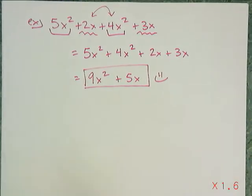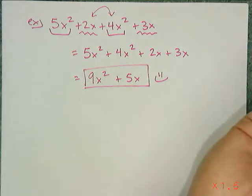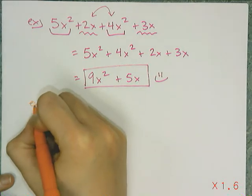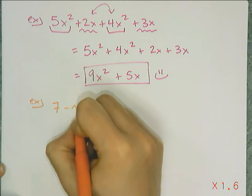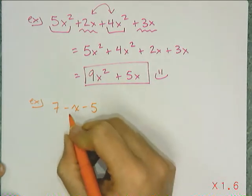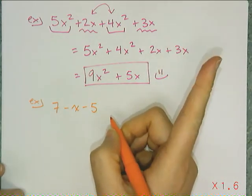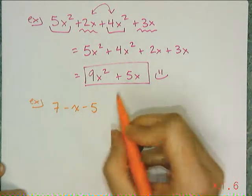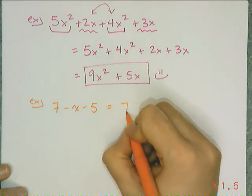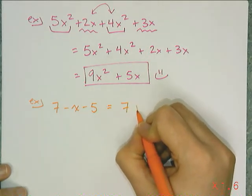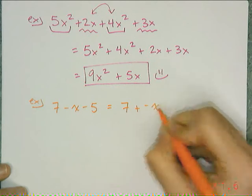Now you may have noticed that every example I've given so far has had positive terms only. That's because the only thing you can commute is addition. So that's the one thing you have to be super careful with. And that's the one thing people mess up with most often is thinking that you can just rearrange these terms. And you can't because you cannot commute subtraction.